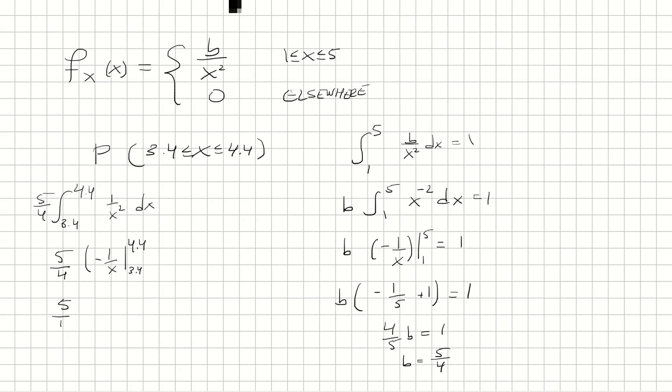So we have 5 fourths, and then negative 1 over 4.4, minus negative 1 over 3.4, so we'll just add that.